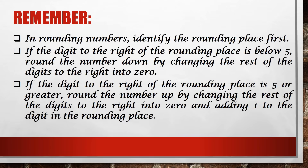Remember: in rounding numbers, identify the rounding place first. If the digit to the right of the rounding place is below 5, round the number down by changing all digits to the right into 0. If the digit to the right of the rounding place is 5 or greater, round the number up by changing all digits to the right into 0 and adding 1 to the digit in the rounding place.